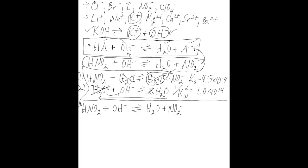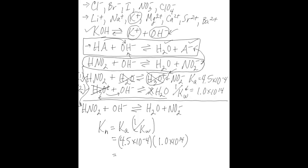We can use equation 1 and equation 2 and their K values to find Kn. Kn for this neutralization reaction is going to be Ka times 1 over Kw. Substituting in the values: 4.5 times 10 to the negative 4, multiplied by 1 over Kw, which is 1.0 times 10 to the 14th. Doing the math, Kn = 4.5 times 10 to the 10. That's your Kn value for the neutralization reaction between nitrous acid and potassium hydroxide.